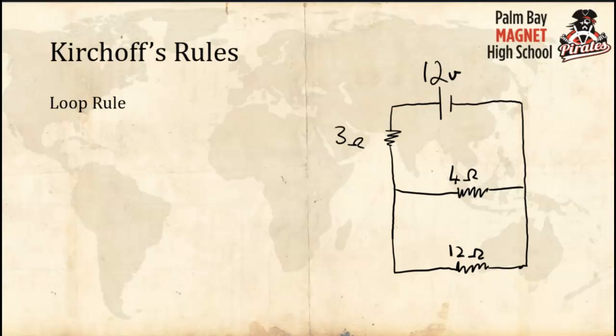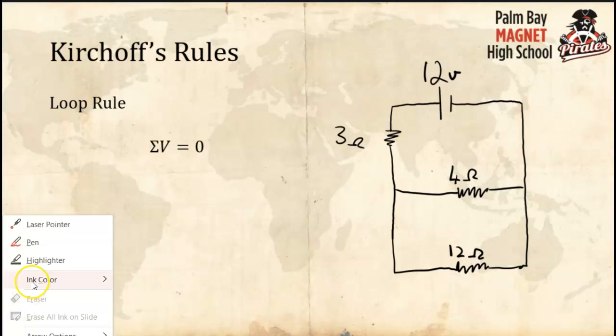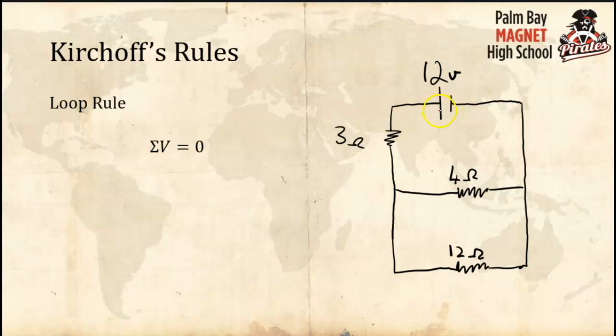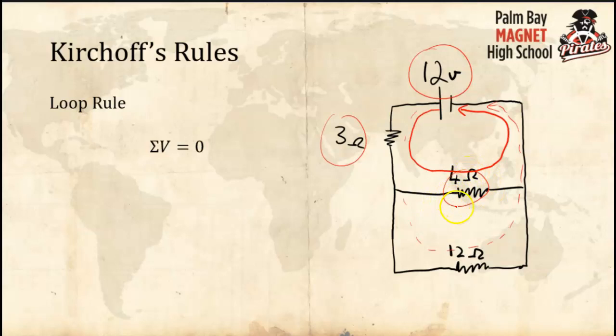The first of these rules is called the loop rule — we've already talked about this. It's a fairly easy one to make sense of. The loop rule basically says that the sum of the voltages in a loop is equal to zero. A loop goes from a battery, around any path, and back to the battery. It tells us that whatever voltage you gain from the battery, you have to lose across the resistors for the voltages to sum to zero.